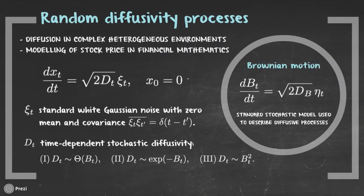Random diffusivity processes are stochastic processes defined by the Langevin equation that you can see here. Xi stands for standard white Gaussian noise with zero mean and delta correlation. D represents a time-dependent stochastic diffusivity. Note that in the case of D being a constant, we recover the standard formulation of Brownian motion that you can see in the inset.